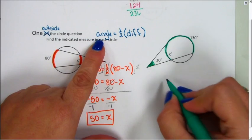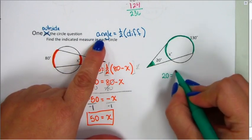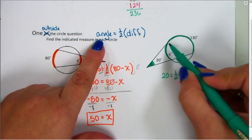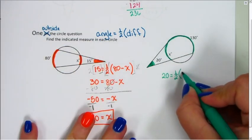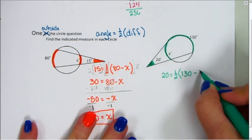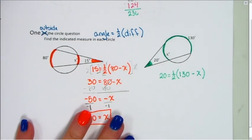The angle, 20 degrees, equals one half the difference of the arcs. I'm going to start with the outside arc first, because I know it will be bigger, then the inside arc. I want to solve for x. I'm going to first get rid of the fraction one half by multiplying by the reciprocal 2.